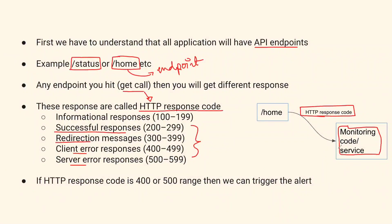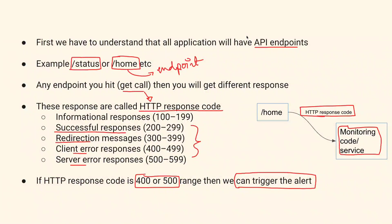The question focuses on checking the health status. If we get any response in the 400 or 500 range, then we can say we have an issue with our API endpoint, and then we can trigger an alert. To answer this in the interview: I would write a script using Python or Linux, make a GET call to the HTTP API endpoint, and if the response is in the 400 or 500 range, I will trigger an alert.